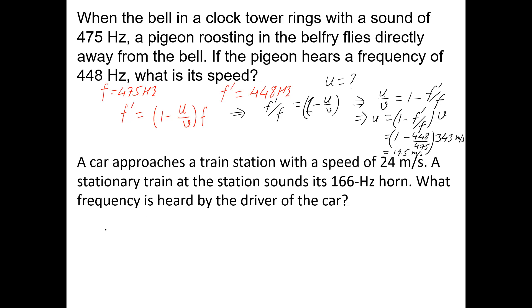Now second one: a car approaches a train station with a speed of 24 meter per second. So this is the speed of the car, which is speed of object, that is given 24 meter per second, u = 24 m/s. A stationary train at the station sounds its frequency, which is given frequency of source, that is f = 166 hertz.